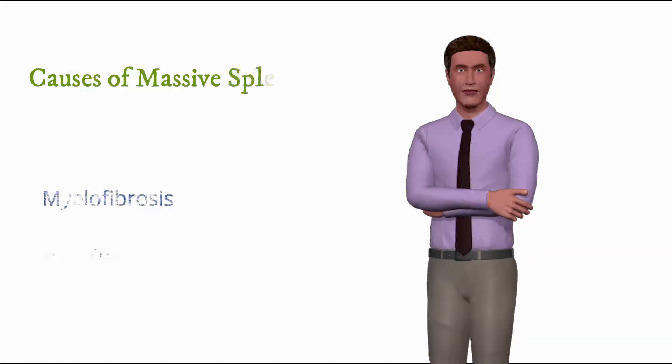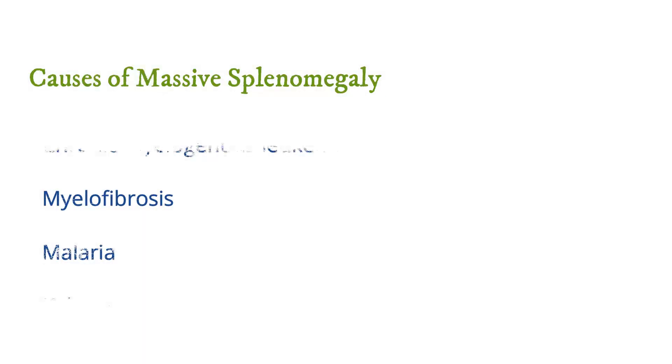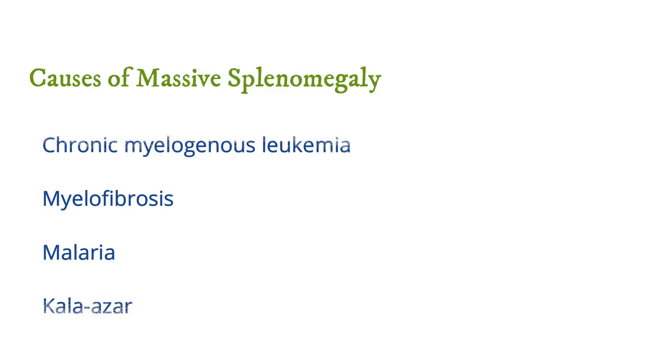Causes of massive splenomegaly include chronic myelogenous leukemia, myelofibrosis, malaria, and kala-azar.